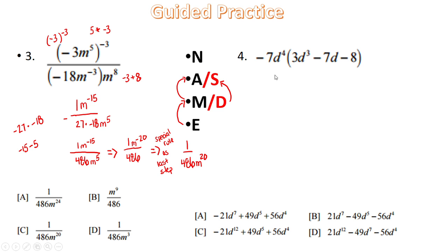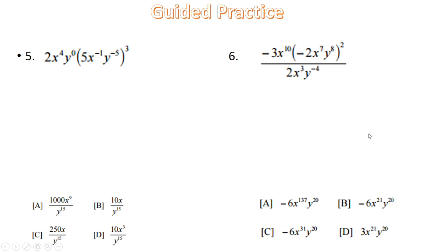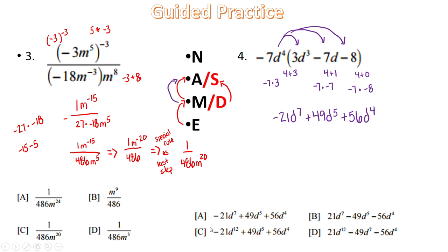Number 4 is a bit easier — we're just distributing. We add the 4 with the 3, giving d to the 7th; add the 4 with the 1, giving d to the 5th; and d to the 4th comes along with the constant 8. Multiplying coefficients: negative 7 times 3 is negative 21, negative 7 times negative 7 is positive 49, and negative 7 times negative 8 is positive 56d to the 4th. None of these are like terms, so that's our final answer — choice A.